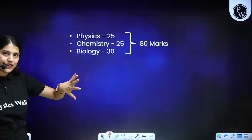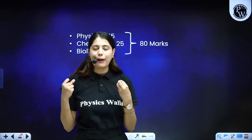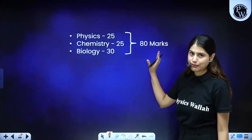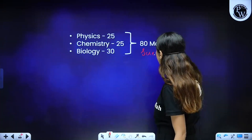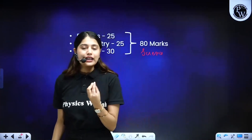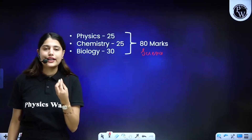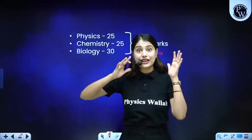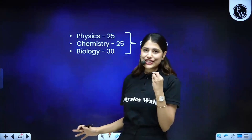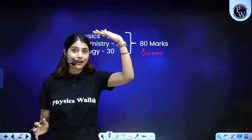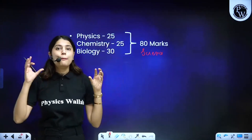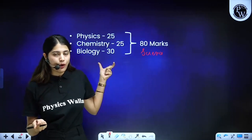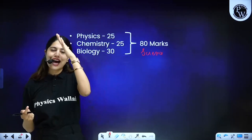First, let's understand the weightage of biology. The science exam consists of 80 marks in total. Out of that, the highest marks is of biology, which is 30 marks. Physics and chemistry are individually 25 marks each. But the highest weightage goes to biology at 30 marks. Now within these 30 marks, what are those topics which are most important? Let's find out so as to skyrocket your marks.